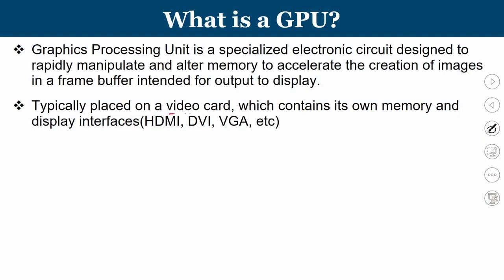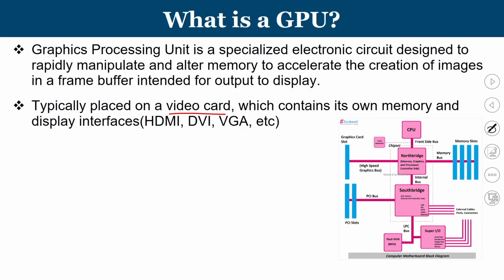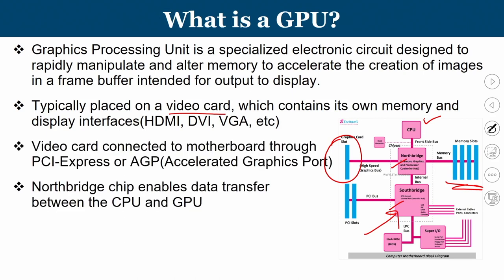A GPU is typically placed on a video card which contains its own memory and a display interface. This is the conventional diagram of your motherboard, where the CPU is housed. We have a north bridge and south bridge. Your main memory is kept here, and all the high-speed graphics devices such as GPU are added into this. Peripheral devices are connected to the south bridge. The north bridge houses faster devices. The video card is attached to the north port, connected to the motherboard through PCI Express or AGP — the accelerated graphics port. The north bridge enables data transfer between the CPU and the GPU.